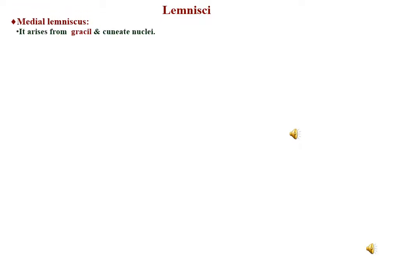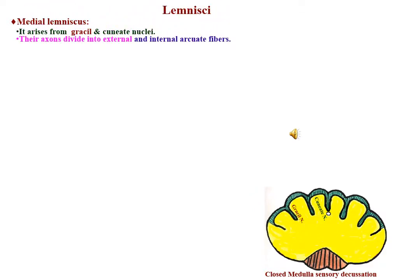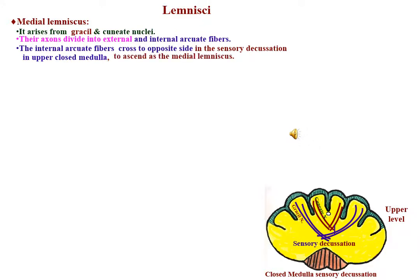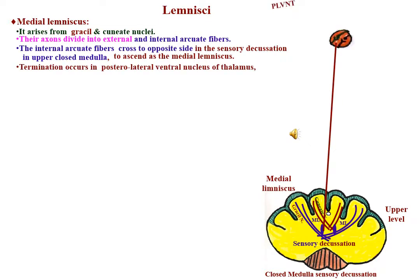It arises from gracile and cuneate nuclei in the dorsal part of the closed medulla. The axons of these nuclei cells divide into external and internal arcuate fibers. The internal arcuate fibers cross in the sensory decussation in the upper part of the closed medulla and ascend upwards as the medial lemniscus. Termination occurs in the posterolateral ventral nucleus of the thalamus, whose cells represent the third-order neuron.